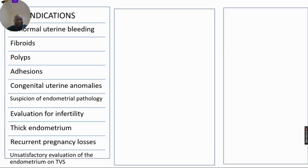These are some of the indications for saline infusion sonography: abnormal uterine bleeding both in pre- and post-menopausal women, uterine fibroids, polyps, intrauterine adhesions, congenital uterine malformations, when there is suspicion of endometrial pathology, in women being evaluated for infertility especially before IVF, when the endometrium is thick in patients with recurrent pregnancy losses, and when evaluation of the endometrium is unsatisfactory on transvaginal scan.